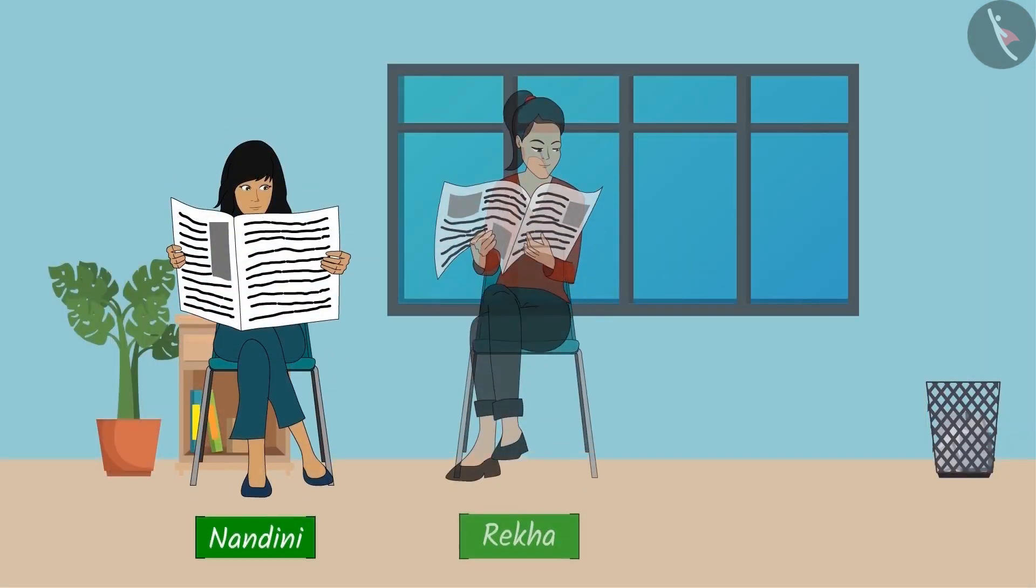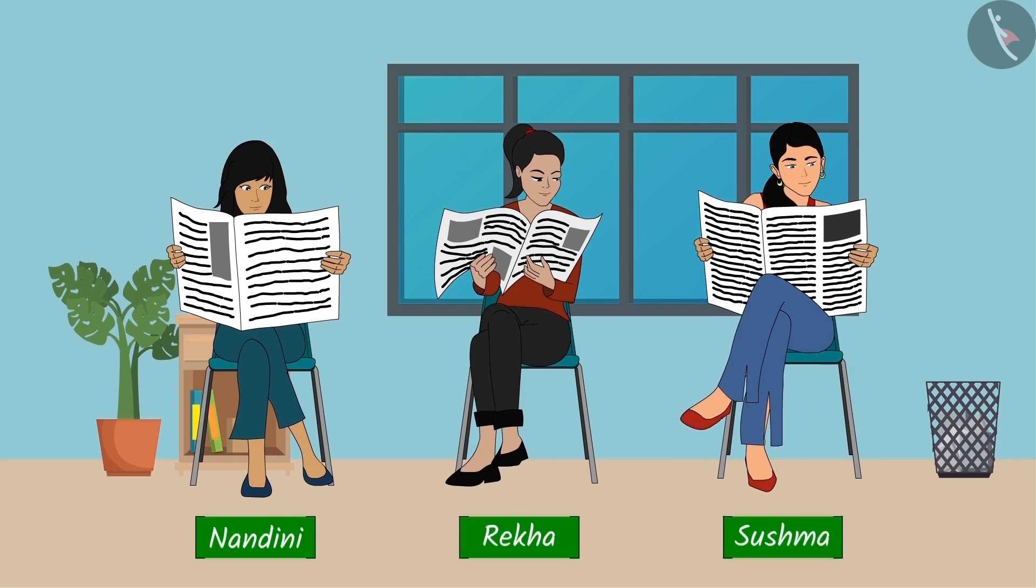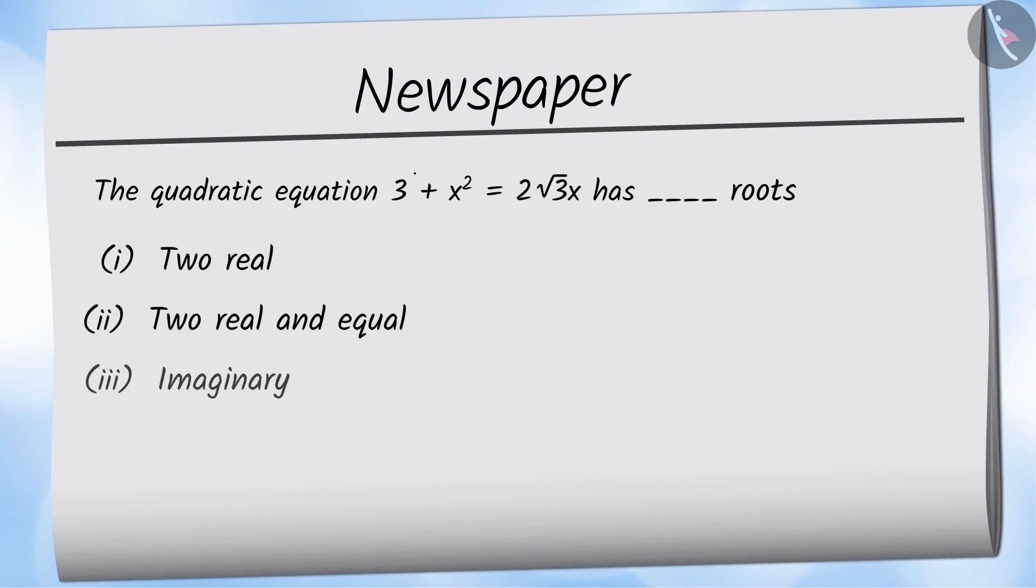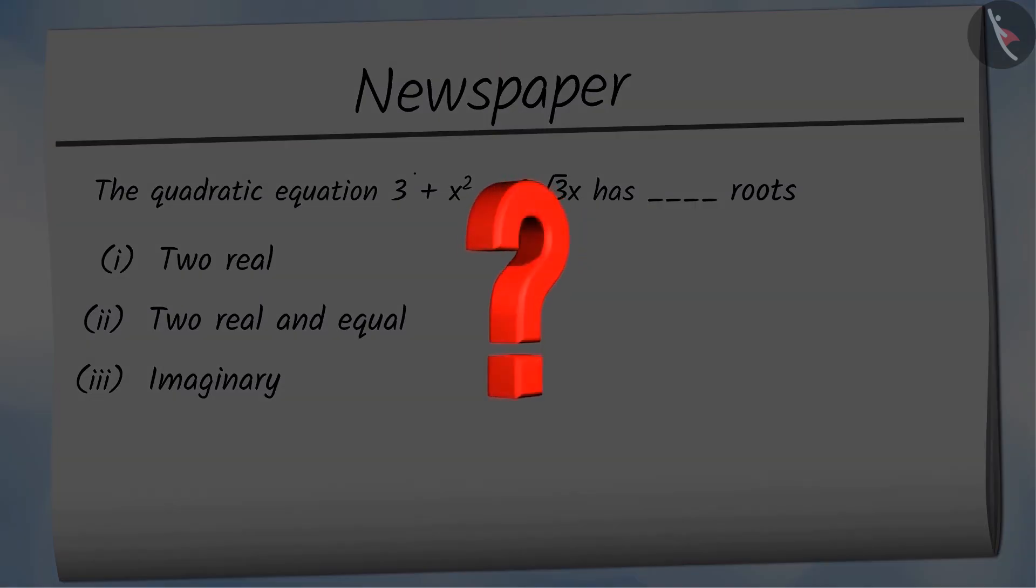Nandini, Rekha, and Sushma saw a question given in the newspaper with a note saying anybody solving the question correctly will win a reward. Sushma, Rekha, and Nandini select options 1, 2, and 3 respectively. Can you tell whose answer is correct and why?